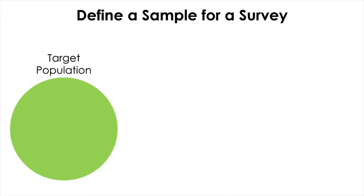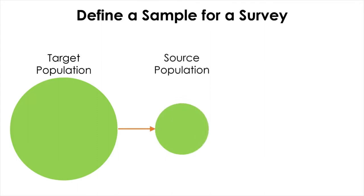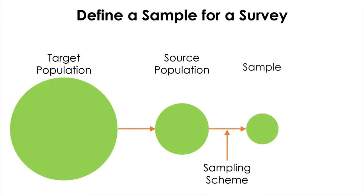In conducting a cross-sectional study using survey, you need to think about who will be your subject for your research. This process requires clear consideration of the target population and the population to which the main results of the study will be extrapolated. For example, if you want to study the distribution of visual impairment in Scotland, your target population will be the entire population living in Scotland. But for practical reasons, it would be impossible to include all the population across Scotland, so you need to identify a suitable source population, such as one of the major cities like Glasgow. If this is still too big, a representative sample needs to be selected from the source population using a sampling scheme.